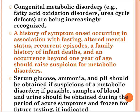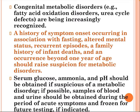Congenital metabolic disorders, such as fatty acid oxidation disorders and urea cycle defects, are being increasingly recognized. A history of symptoms occurring in association with fasting, altered mental status, recurrent episodes, family history of infant death, and occurrence beyond one year of age should raise suspicion for metabolic disorder. Serum glucose, ammonia, and pH should be obtained if a metabolic disorder is suspected. If possible, samples of blood and urine should be obtained during the period of acute symptoms and frozen for future testing.